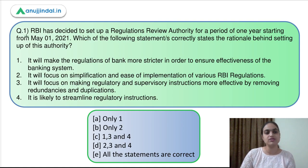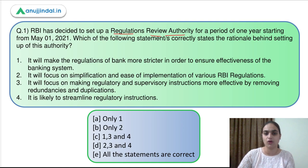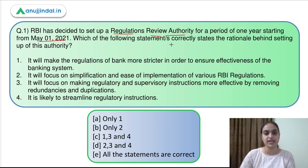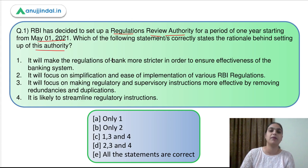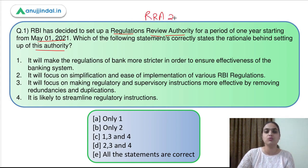This question says that RBI has decided to set up a Regulations Review Authority for a period of one year starting from May 1st, 2021. Which of the following statements correctly states the rationale behind the setting up of this authority? Recently RBI came up with this decision of setting up authority RRA 2.0.